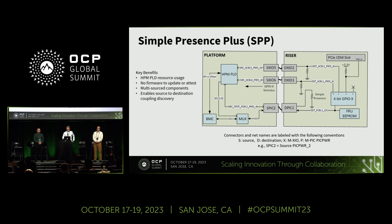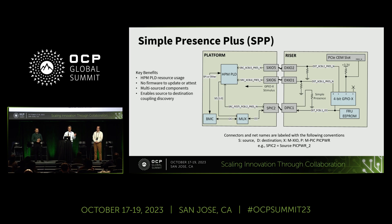The clear advantages here are that the 4-bit GPIO expander is immutable — it's an ASIC, it doesn't require firmware updates, it does not require security attestation. Broad multi-sourcing is available. It's small and cheap. And it meets all the requirements without even a light-protocol PESTI.